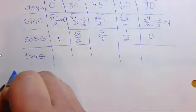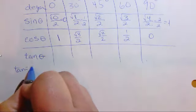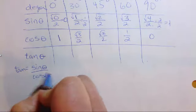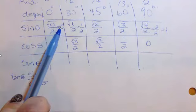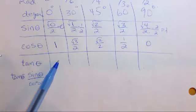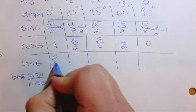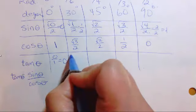Now we also know that tan is equal to sine over cos theta. So all I'm going to do is I'm going to take for tan, I'm going to take this number, divide it by this number, and that's going to go here. So 0 over 1 that equals 0.